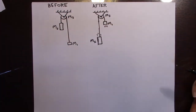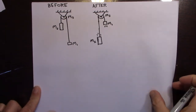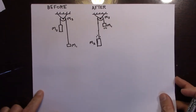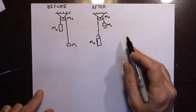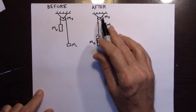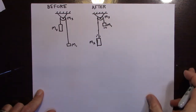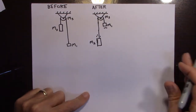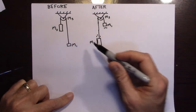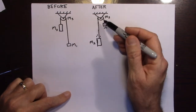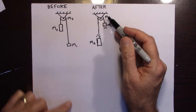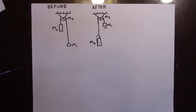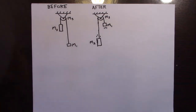This pulley is going to have some friction in the axle, so there's going to be some thermal energy created from that friction. We're going to say air resistance is negligible. The pulley also has some rotational inertia because it has a non-negligible mass.